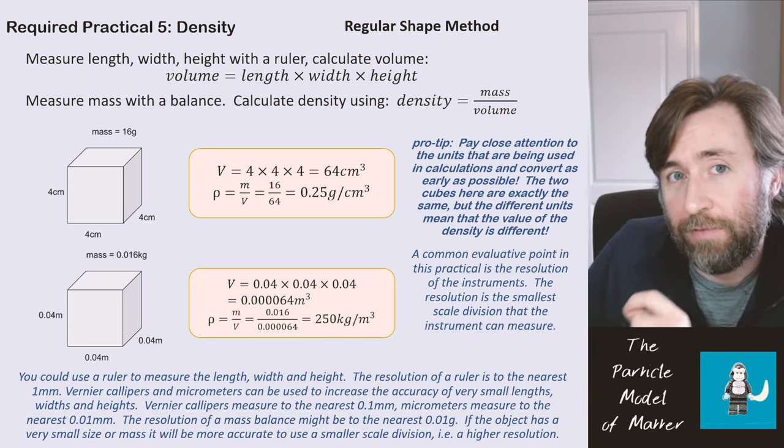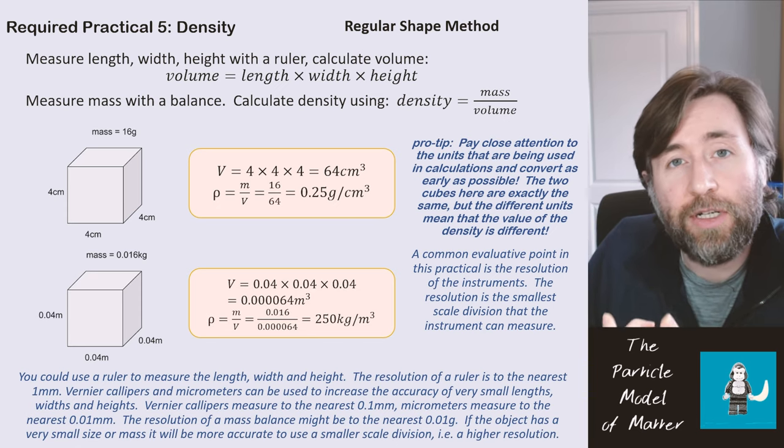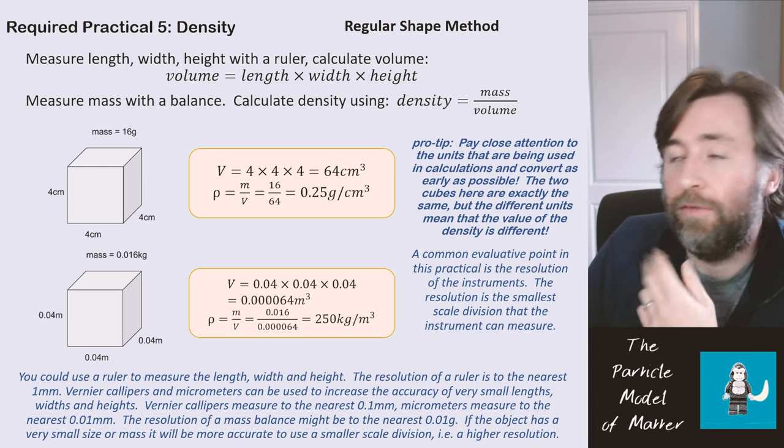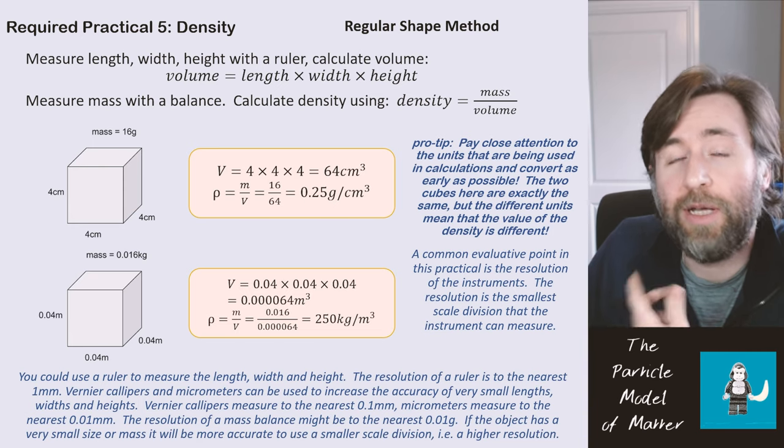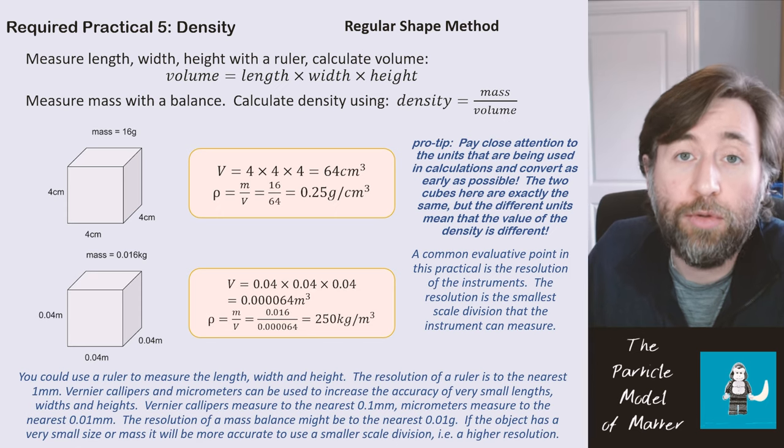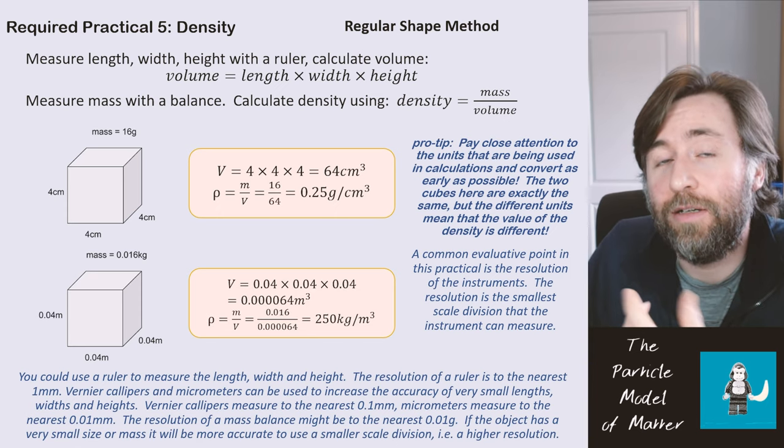So if you want to measure very small lengths, width, and height, try using a vernier caliper or a micrometer. Vernier calipers measure to 0.1 millimeter, and micrometers measure to 0.01 millimeter. That is a higher resolution.